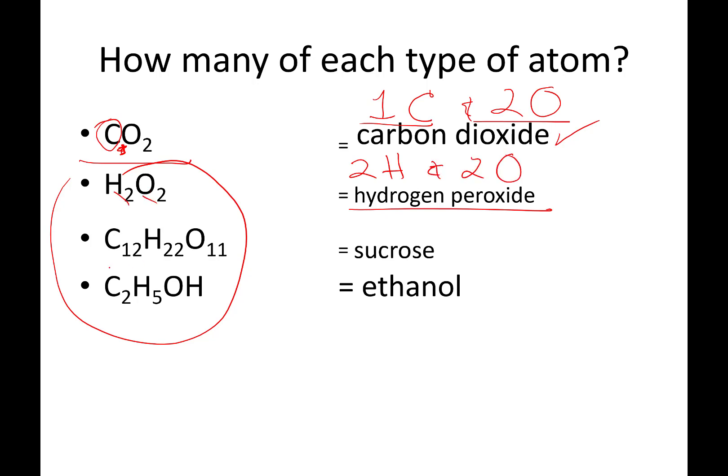Sucrose, table sugar, 12 carbons, 22 hydrogens, and 11 oxygens. One of the cool things about sucrose you'll notice in here, there is a ratio of H2O. Whenever you burn sucrose, you get out carbon and water. When you metabolize sugar, you get carbon and water. Pretty cool stuff.